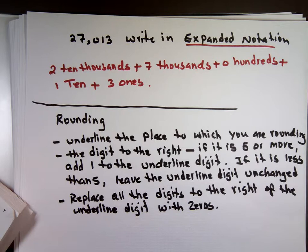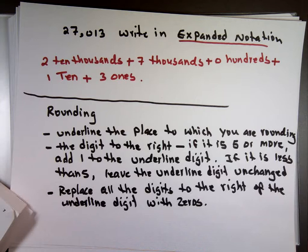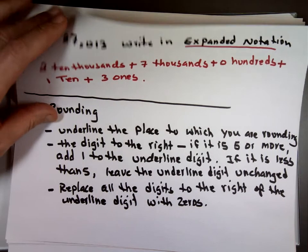So that's the step of rounding. Underline the digit you want to round to. Look at the digit to the right of that if it's five or more you add one to that digit. If it's not five or more don't change it and replace all the digits to the right with zeros. I'm going to take some examples here and go through them. We'll follow the steps to see if we can do them.